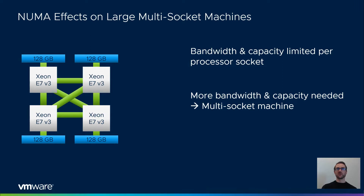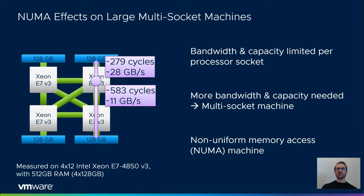Each processor has memory attached to the local memory controllers which is accessible by all processors. This increases the total capacity of and bandwidth to physical memory. However, this also results in a NUMA architecture. Memory accesses now become non-uniform. Accesses to remote memory observe a lower bandwidth and higher latency than accesses to local memory resources. On our test machine we measured roughly half the bandwidth and double the latency.